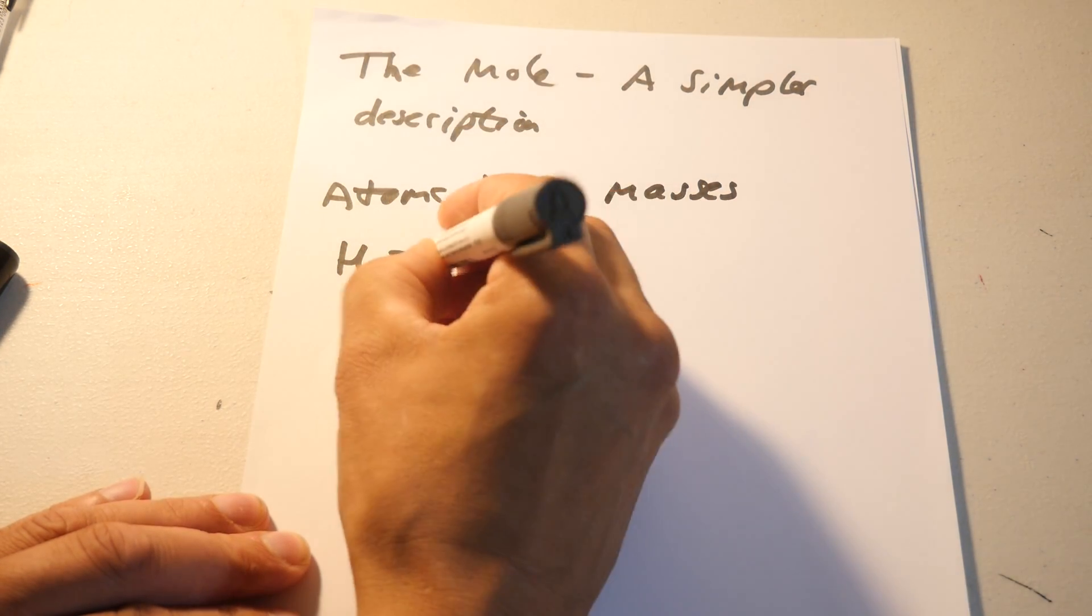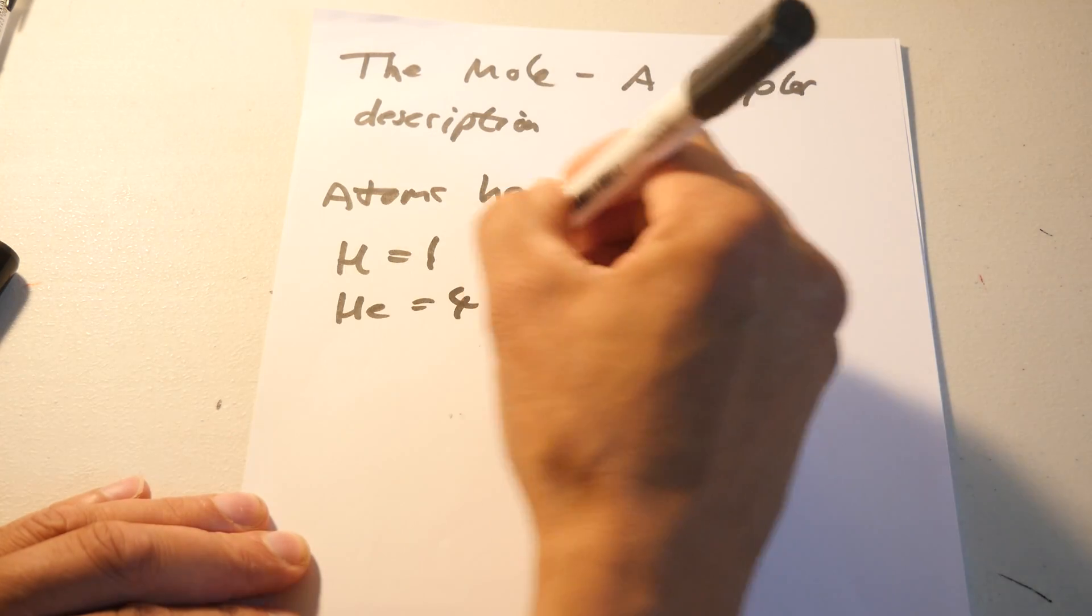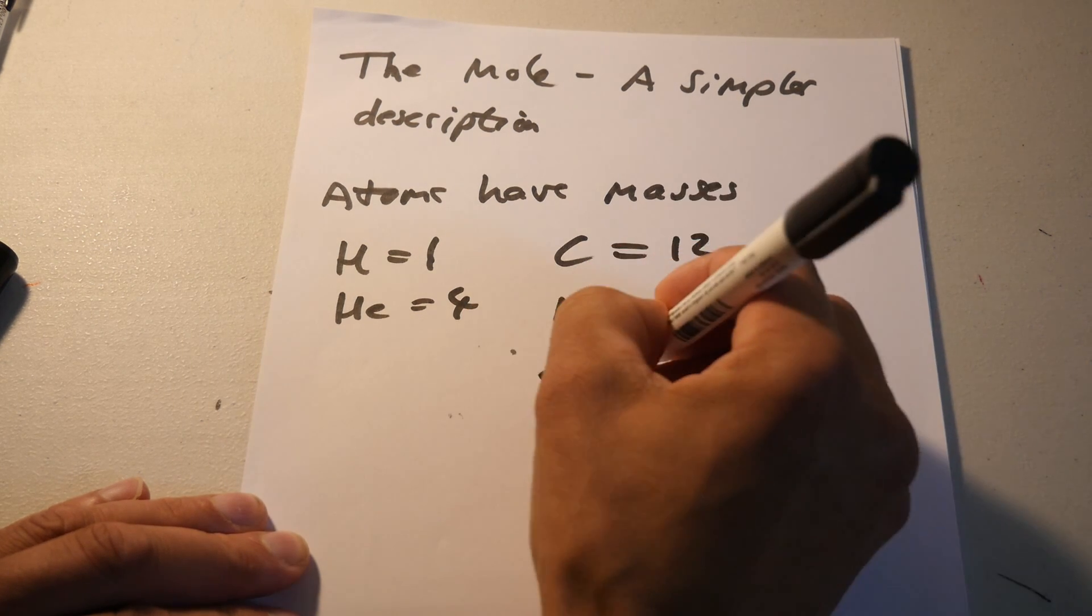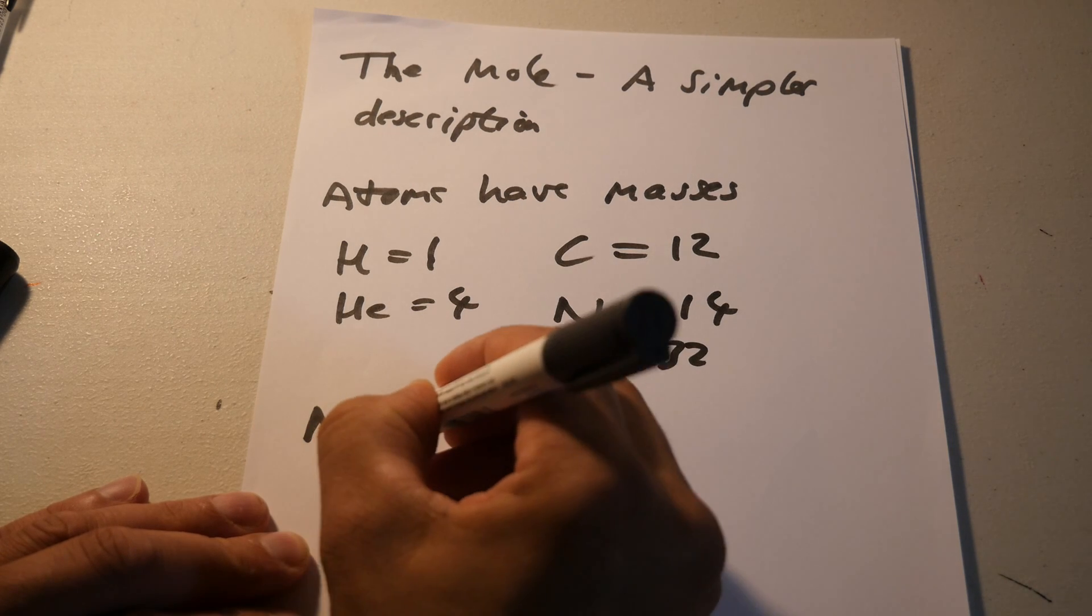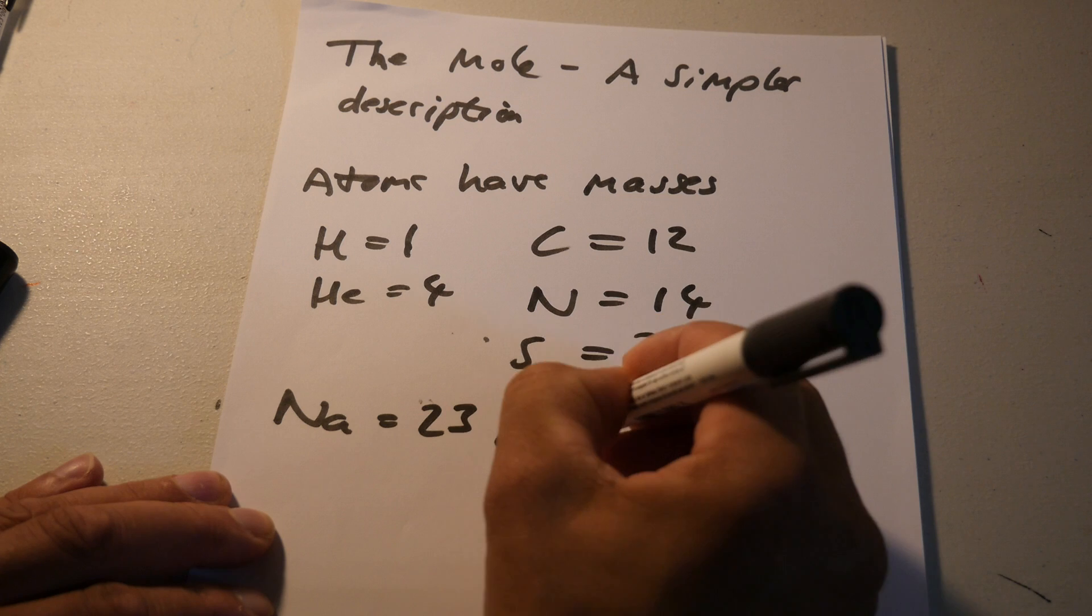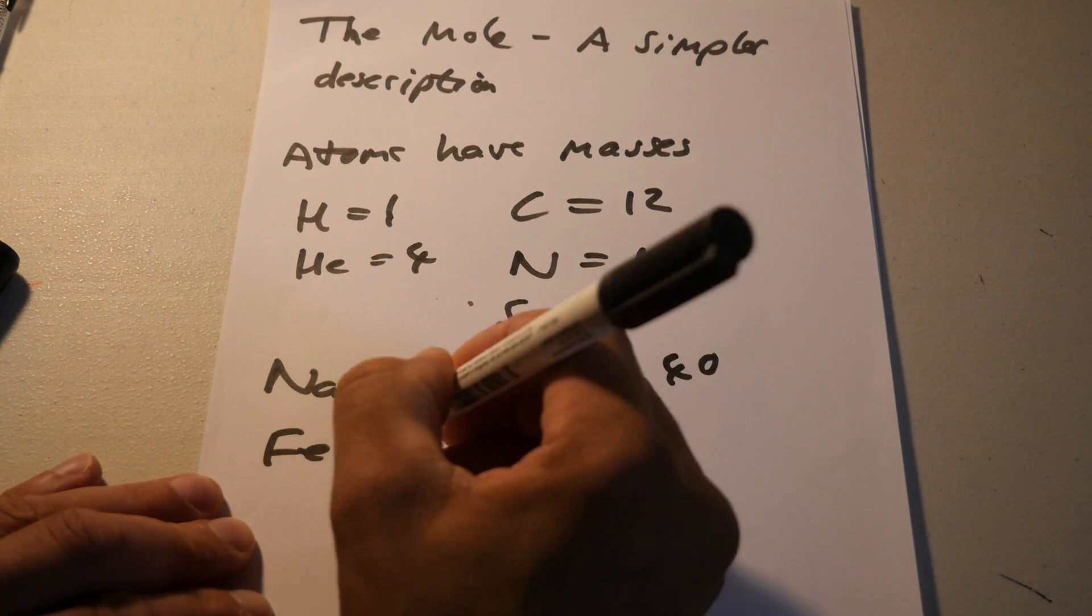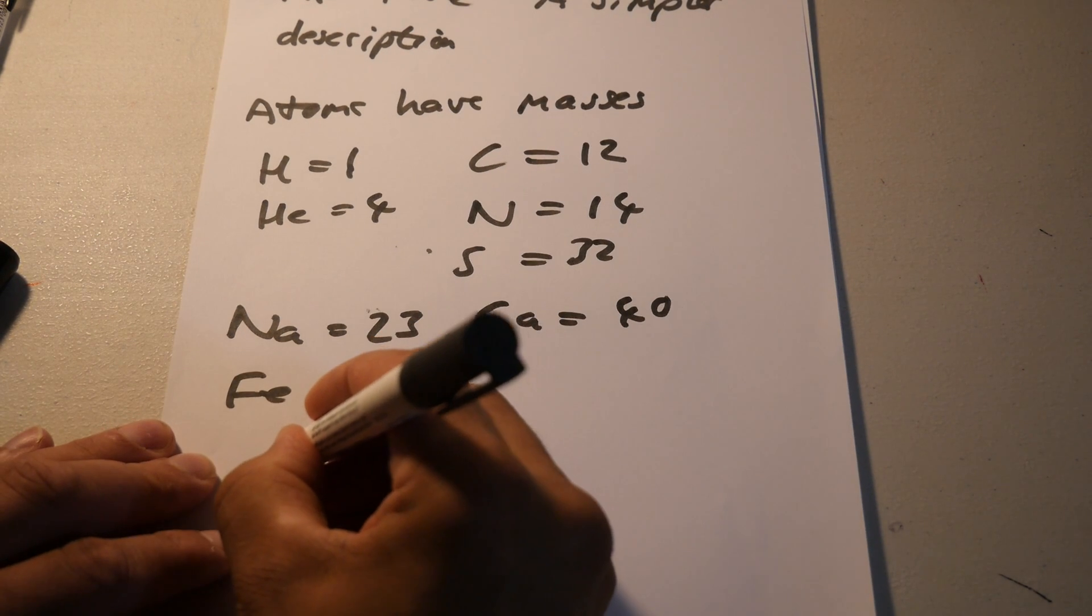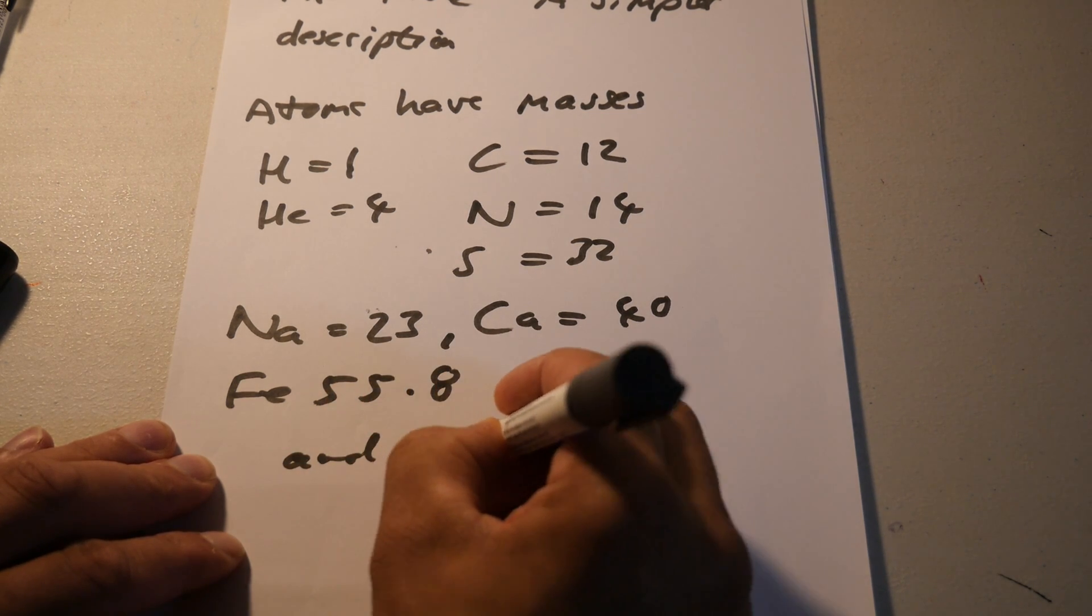So Hydrogen equals 1, Helium equals 4, Carbon equals 12, Nitrogen equals 14, Sulfur equals 32, Sodium equals 23, Calcium equals 40, and so on. Iron equals 55.8, and so on.